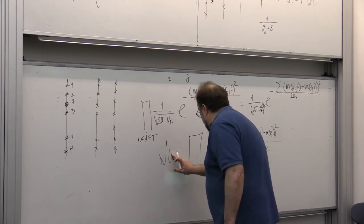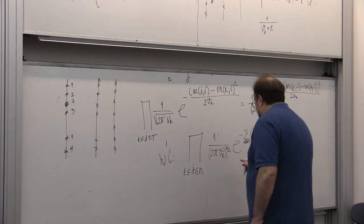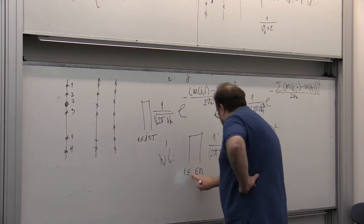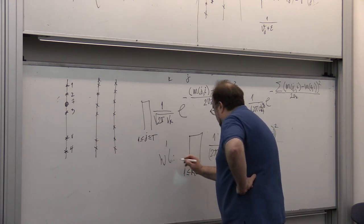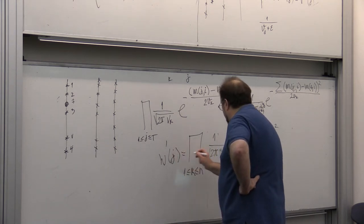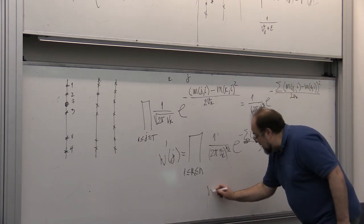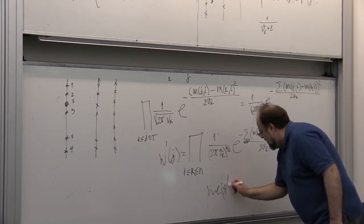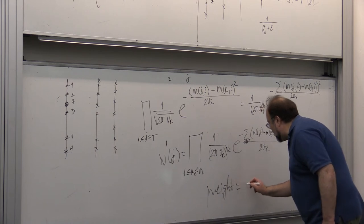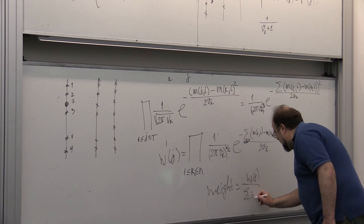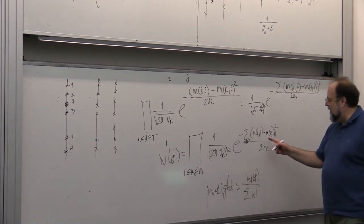No, sorry, so this is product with respect to all k's, and the sensor is j sensor. Of course, and then the weight is equal to wj divided by the sum of w's.